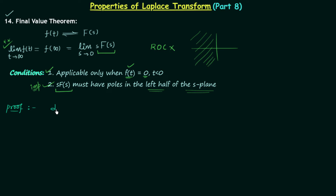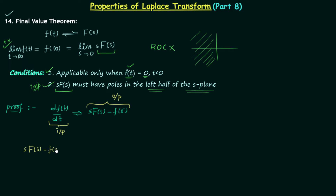Now we will prove the final value theorem. In the previous lecture we saw that the time domain signal df(t)/dt has the unilateral Laplace transform equal to s·F(s) minus F(0⁻). This unilateral Laplace transform equals the integration from 0⁻ to infinity of df(t)/dt multiplied by the integral kernel e^(−st) dt. Now we will apply the limit as s tends to zero on both sides.